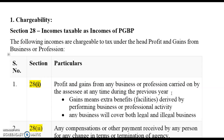Any profit or gain from business, profession, or vocation in the previous year must be added. 'Gains' means extra benefits or facilities derived from performing business or professional activity. Importantly, any business covers both illegal and legal business — the IT Act makes no distinction. Even if you are doing illegal business, you still have to pay tax.